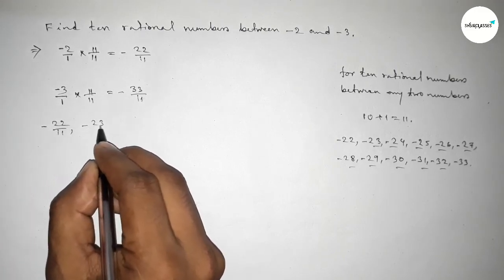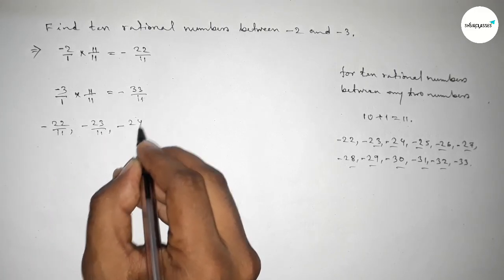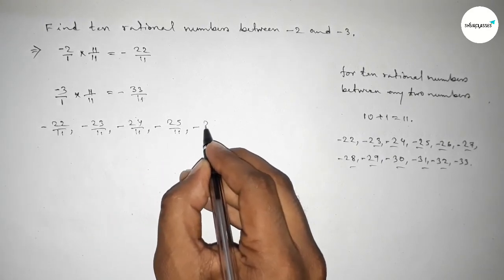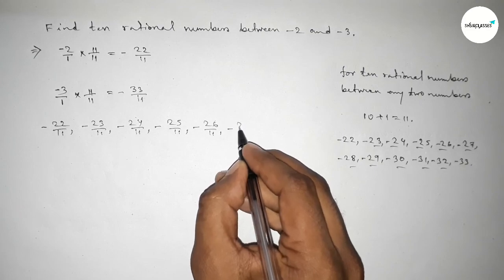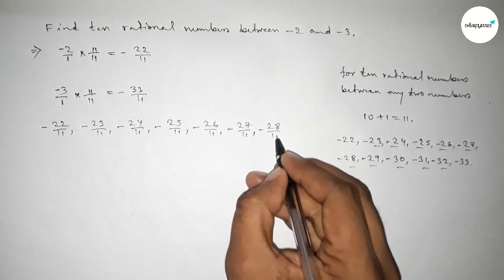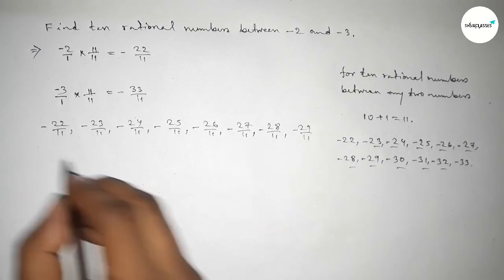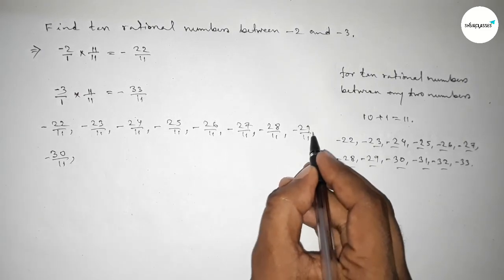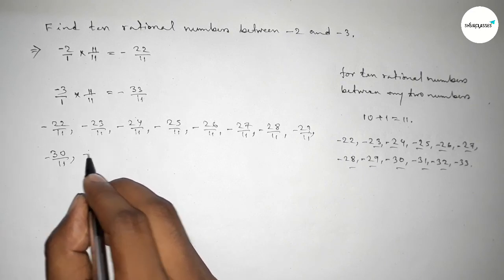So here first one minus 22 over 11, minus 23 over 11, minus 24 over 11, minus 25 over 11, minus 26 over 11, minus 27 over 11, up to last minus 33 over 11.